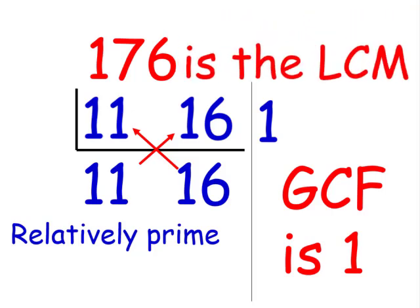Sometimes the greatest common factor is 1, and that's when the two numbers are relatively prime. This concludes our lesson for today.